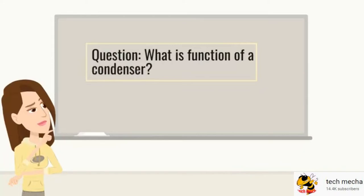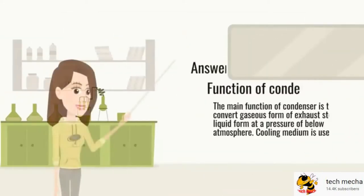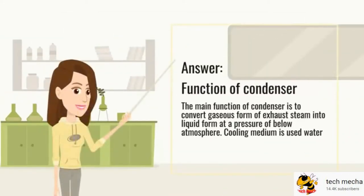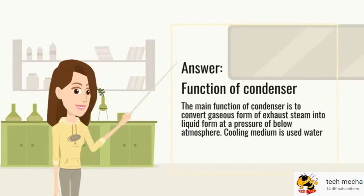What is the function of a condenser? The main function of a condenser is to convert the gaseous form of exhaust steam into liquid form at a pressure below atmosphere. Cooling water is used as the medium to convert steam into water.